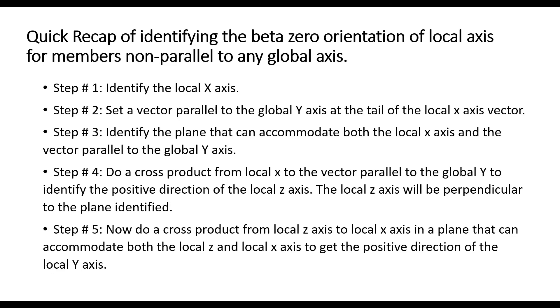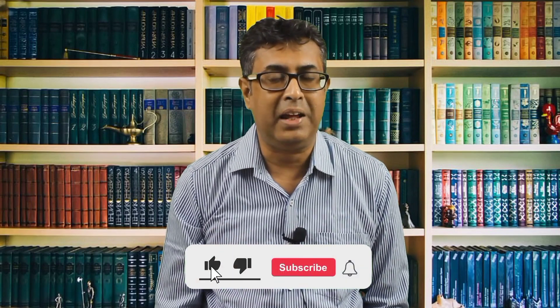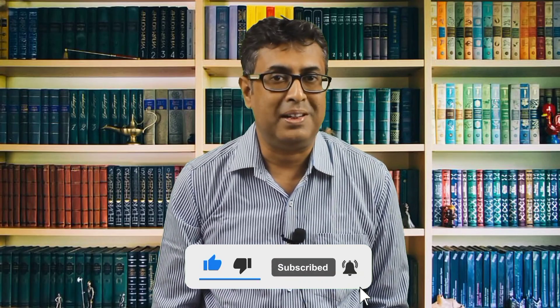An important thing to note is that this procedure holds good for all cases we have discussed, even for members parallel to a global axis — but it does not hold when the member is parallel to the global Y-axis. I hope you have a clear understanding of the beta-zero configuration of the local axis system of members in StatPro. If you have any questions, do ask them in the comment section below. I hope you enjoyed the video — please hit the like button and join us in the next one. Till then, bye.